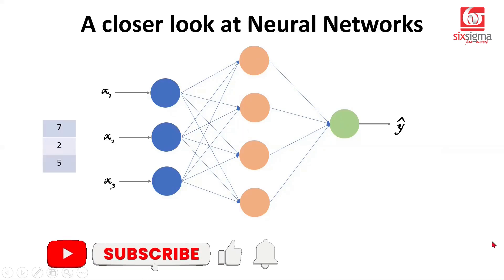Let's bring some numbers here. Let's say our input variable values are seven, two, and five, which means x1 is seven, x2 is two, and x3 is five.